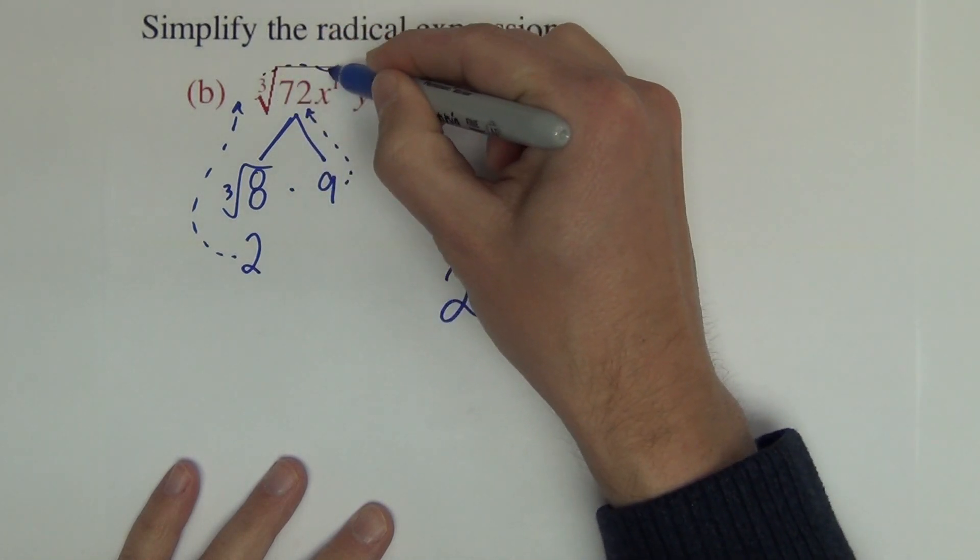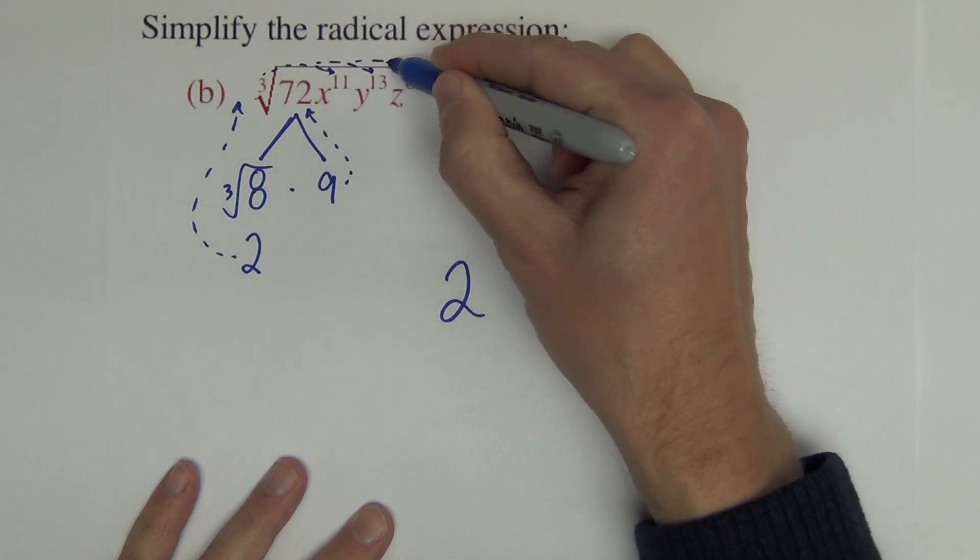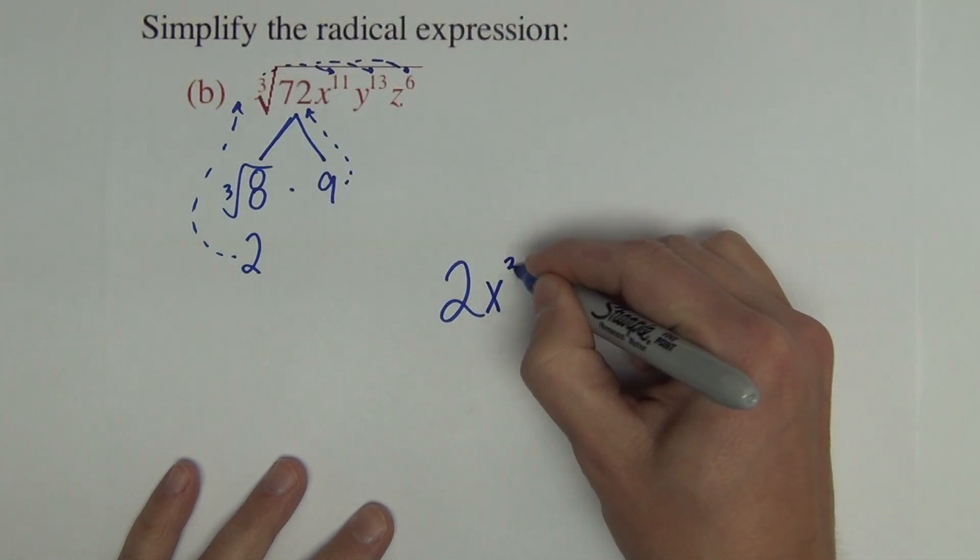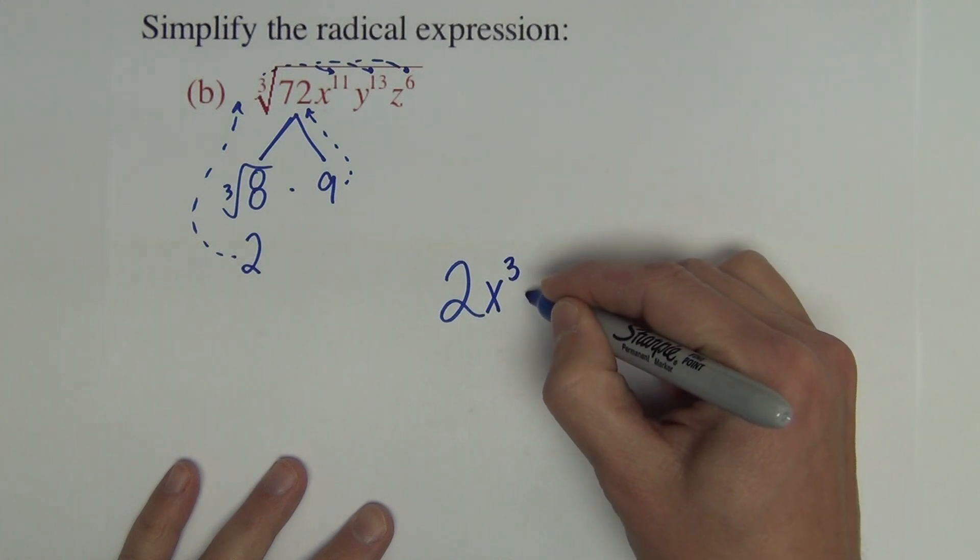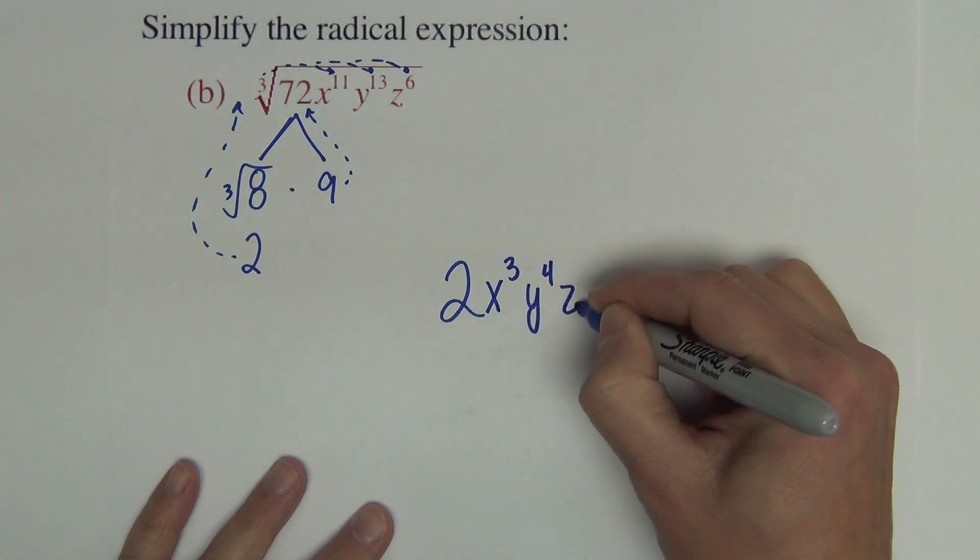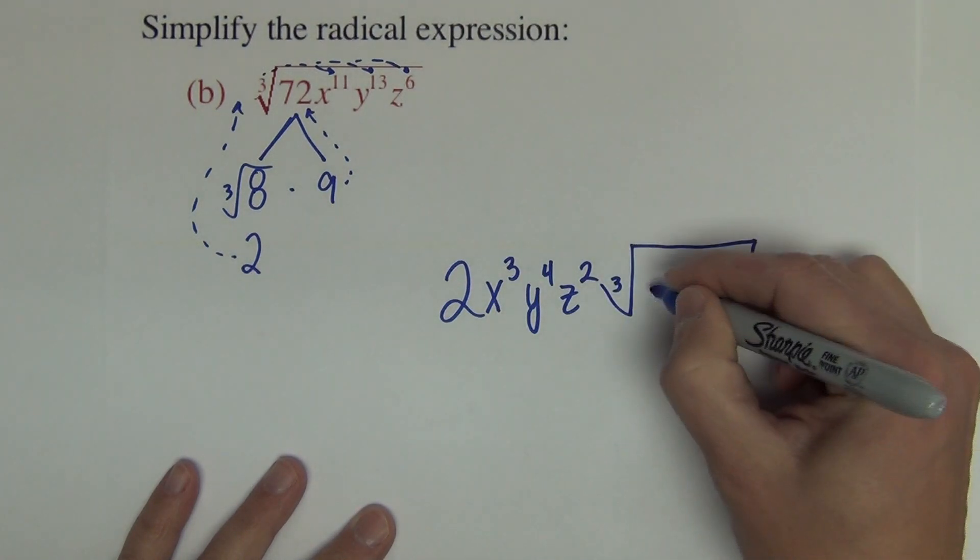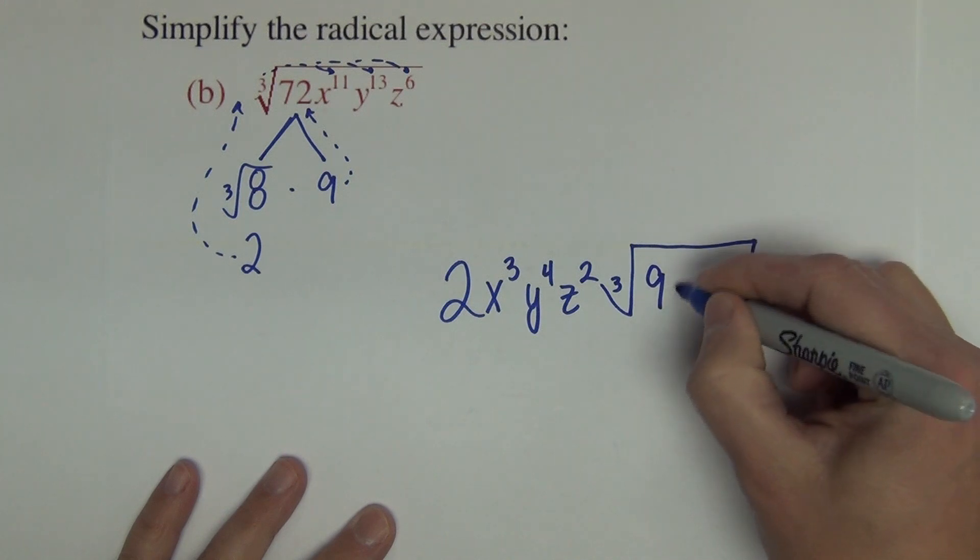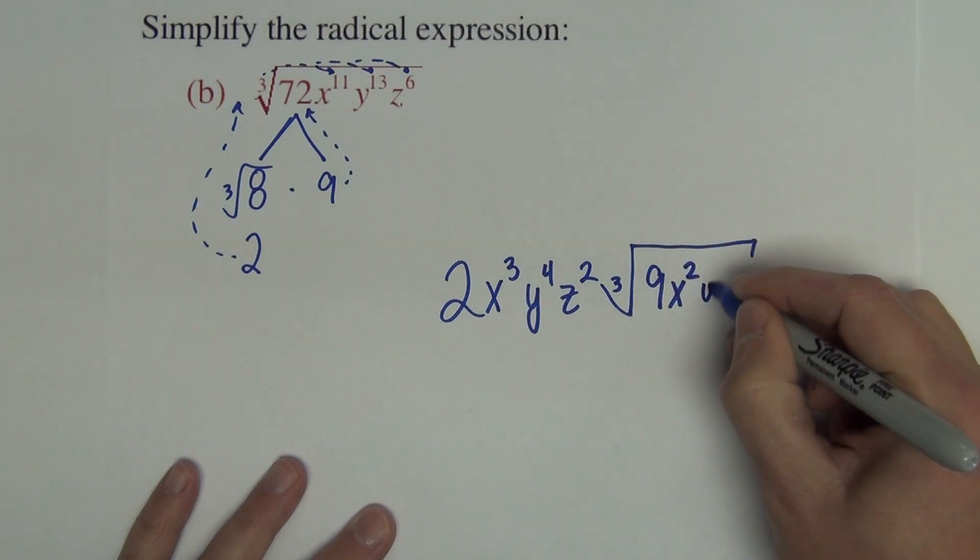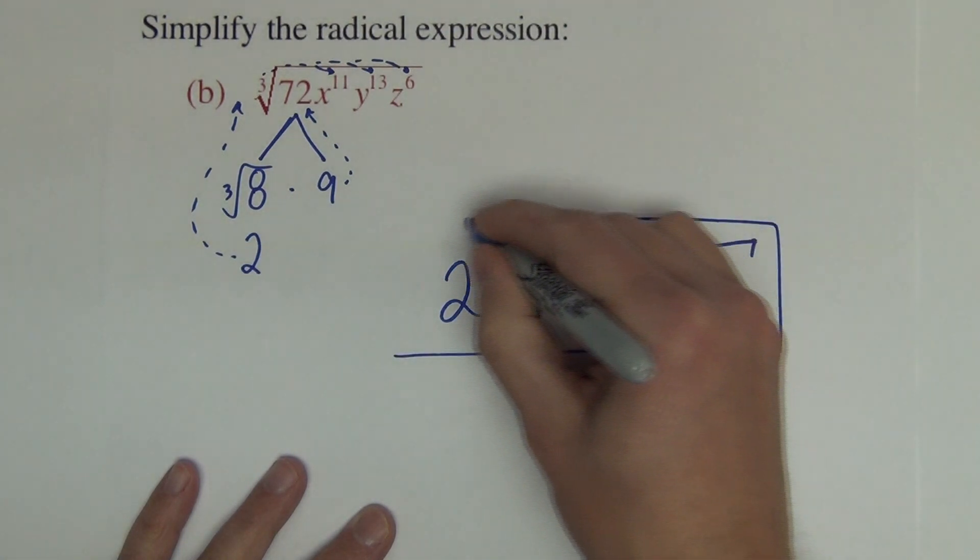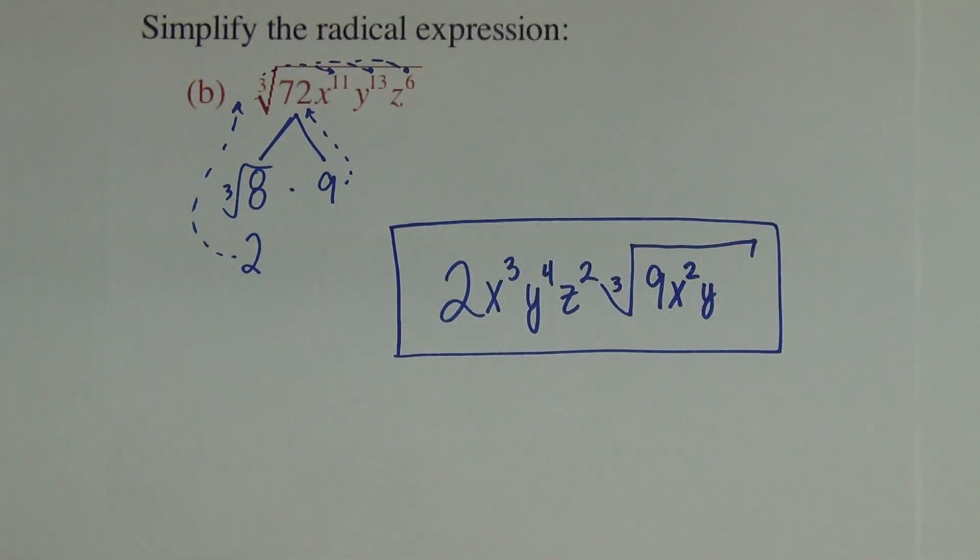The 3 divides into the 11, 13, and 6. So 3 goes into 11, 3 times, and a 13, 4 times, and a 6, 2 times, leaving behind 9. Let's see, this is going to be x cubed y to the fourth z squared, because we have a remainder of 2 on the x, we have a remainder of 1 on the y, and we have no z remainder, as the index on the radical divided that power evenly.